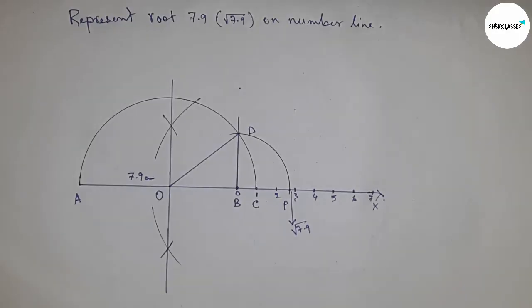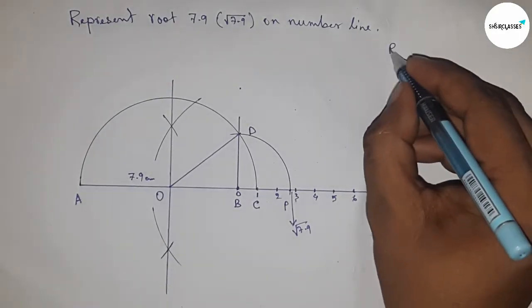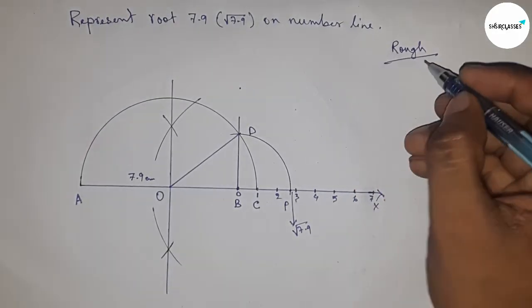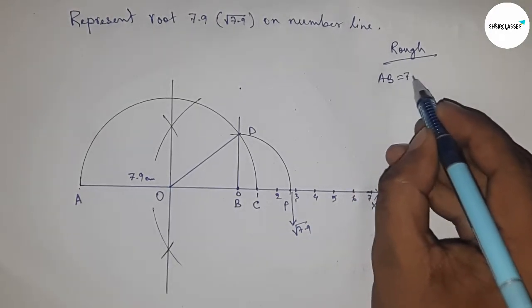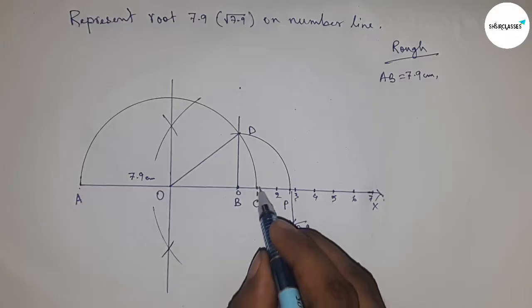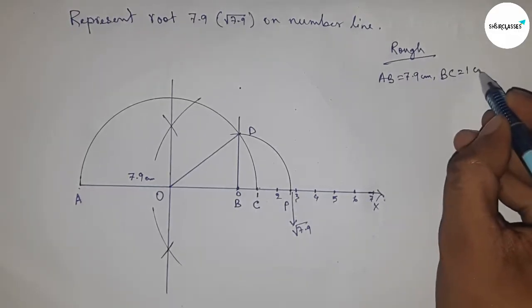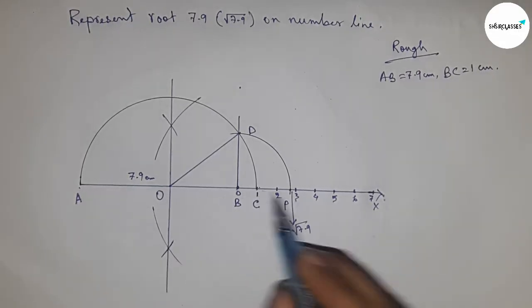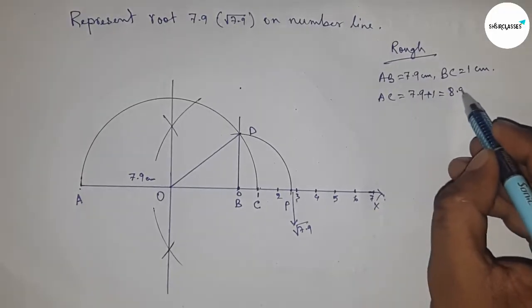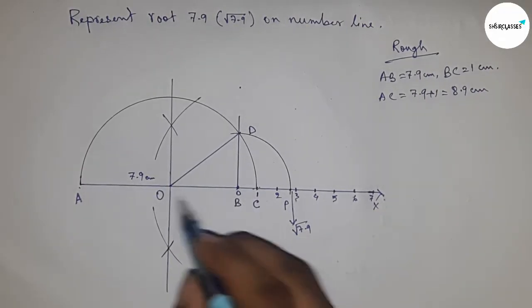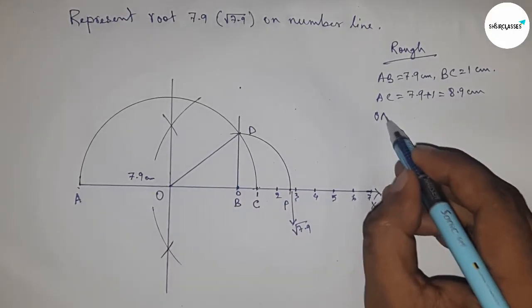Now discussing the calculation. AB equals 7.9 centimeters, BC equals 1 centimeter, and we can write AC equals 7.9 plus 1, so 8.9 centimeters.